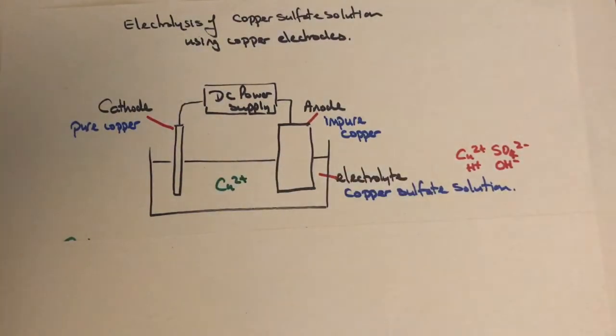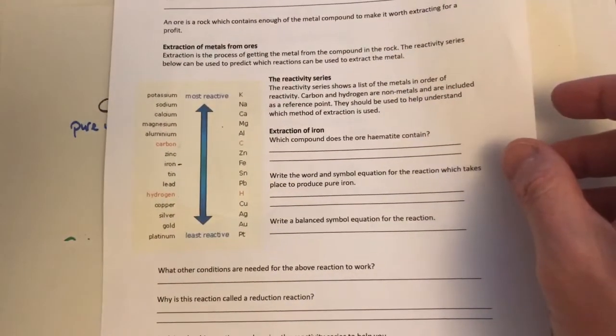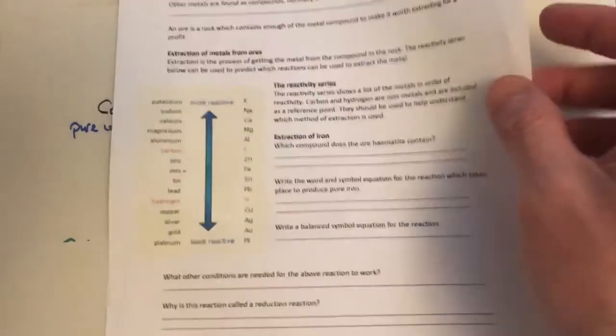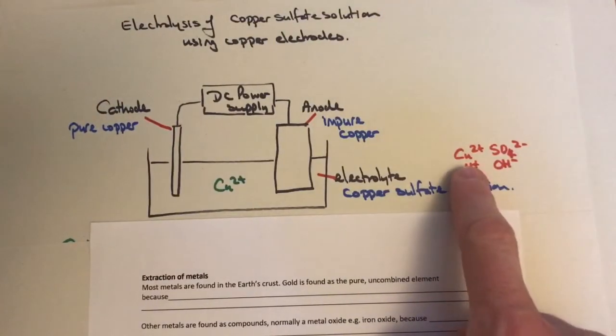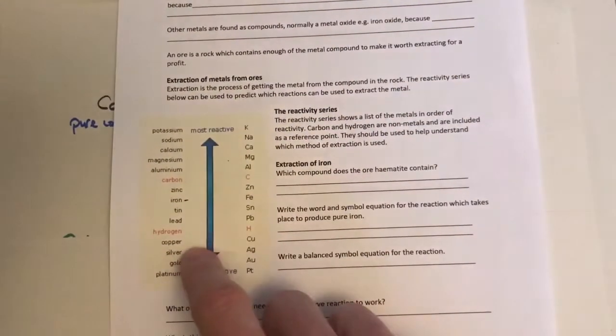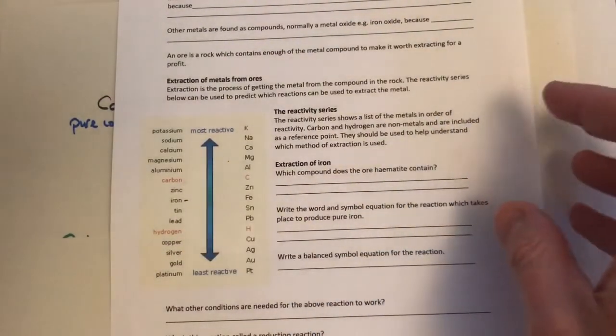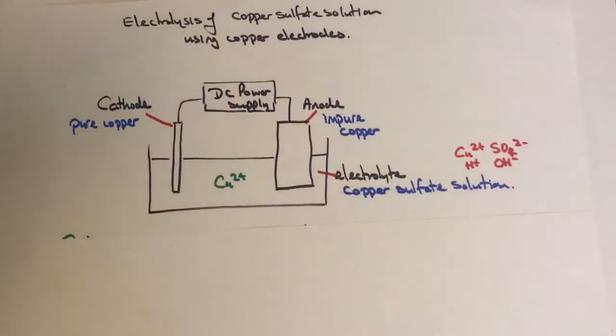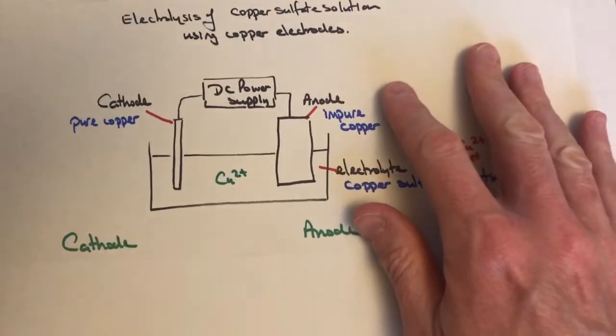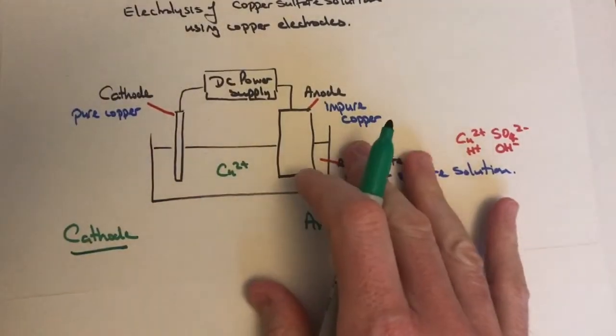If you compare the cations in this solution—copper and hydrogen—and look at the reactivity series, hydrogen is more reactive than copper. Therefore, copper, being least reactive, will react first. The copper ions migrate across to the cathode.